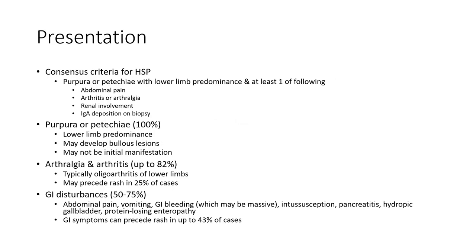Consensus criteria for HSP include palpable purpura with lower limb predominance and at least one of the following: abdominal pain, acute scrotal pain or crisis, renal involvement, or IgA deposit on biopsy. Overall, palpable purpura is 100% lower limb predominant; may develop bullous lesions.